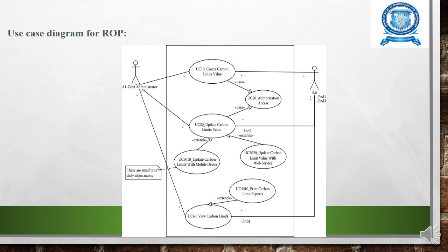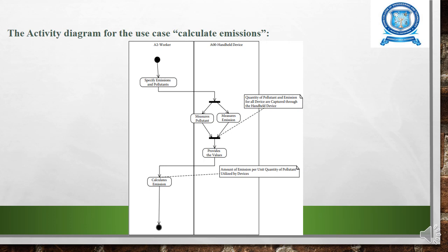The regulatory portal will create carbon limit values, handle authorization access, update carbon limit values, update carbon limits with web service, print carbon limit reports, and view carbon limits. Workers will specify emissions and pollutants, measure pollutants and emissions. The quantity of pollutant emissions for all devices is captured on a handheld device, providing the value to calculate the emission amount per unit quantity of pollutant utilized by the devices.